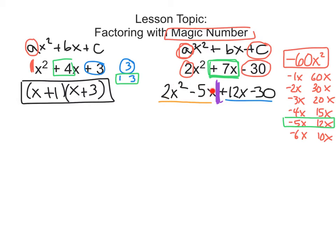So if you look at the left side, 2 and 5 don't have a common factor. But x squared and x have a common factor of x. So I'm going to factor out an x. If I have 2x squared and I factor out an x, I'm left with 2x. And if I have negative 5x and I factor out an x, I'm left with negative 5.